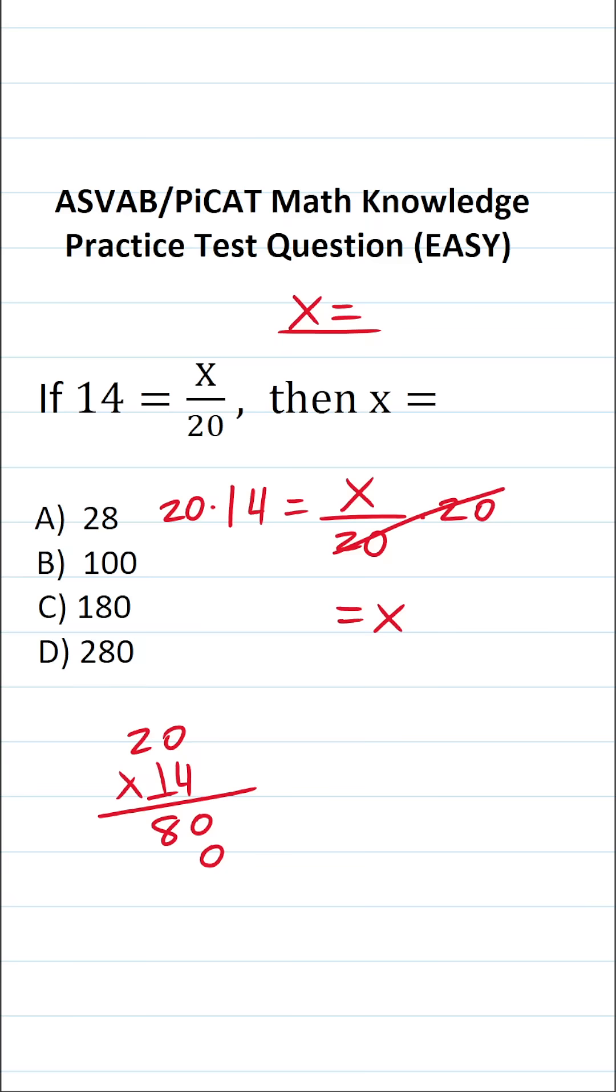1 times 0 is 0, 1 times 2 is 2. Let's add all this up. This is 0, 0 plus 8 is 8, 2 plus nothing is 2. So we can see x in this case is going to be 280.